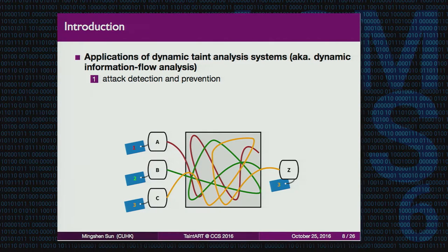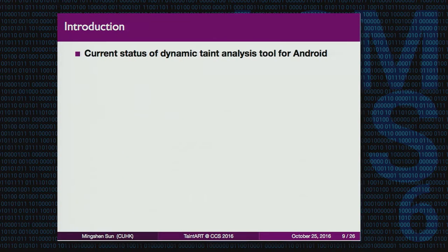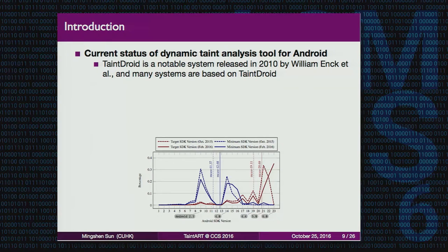There are a lot of applications for dynamic taint analysis systems. This system can be used to detect and prevent attacks, for information policy enforcement, testing in software engineering, and data lifetime and scope analysis. In Android, as introduced by William, there is already a taint analysis system called TaintDroid, a notable taint analysis system introduced in 2010 by my session chair. And there are a lot of systems based on TaintDroid.